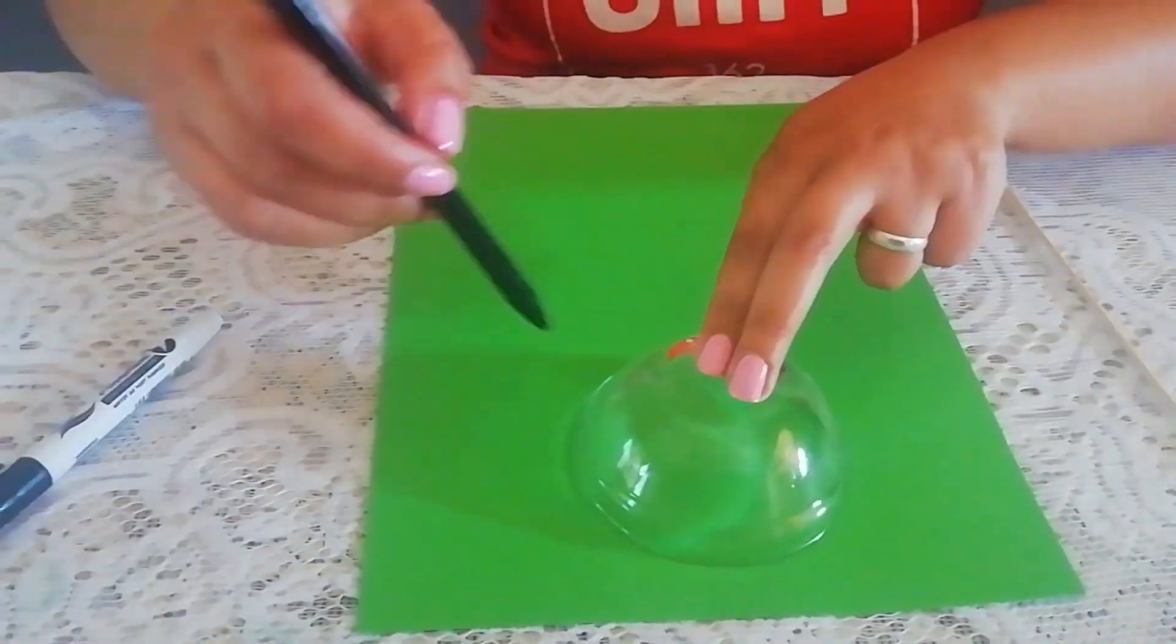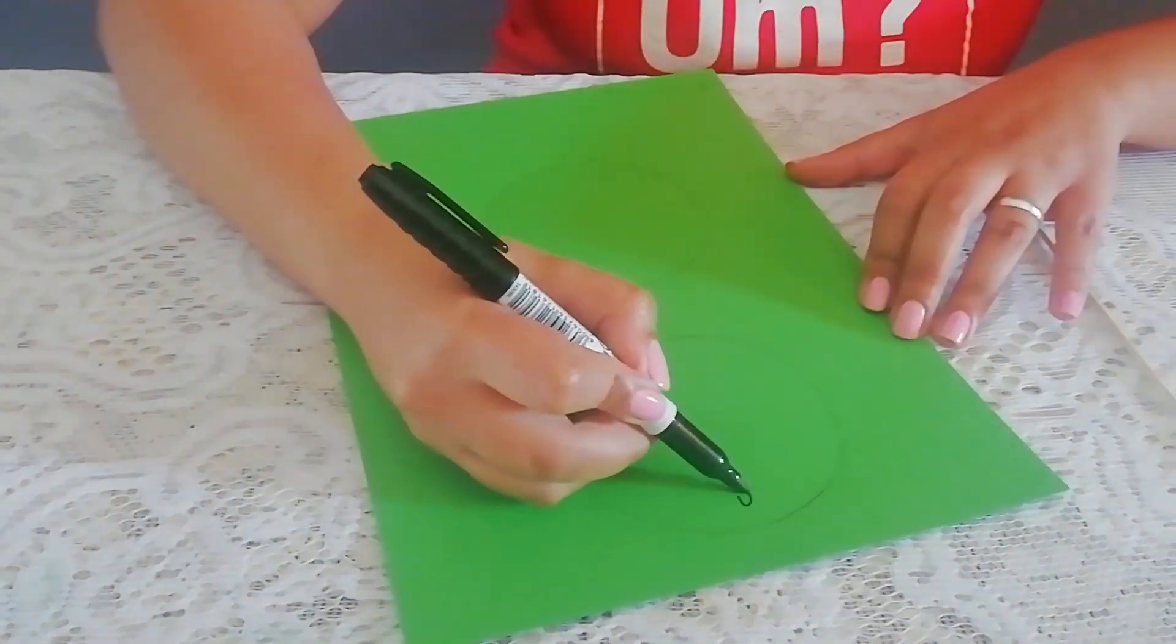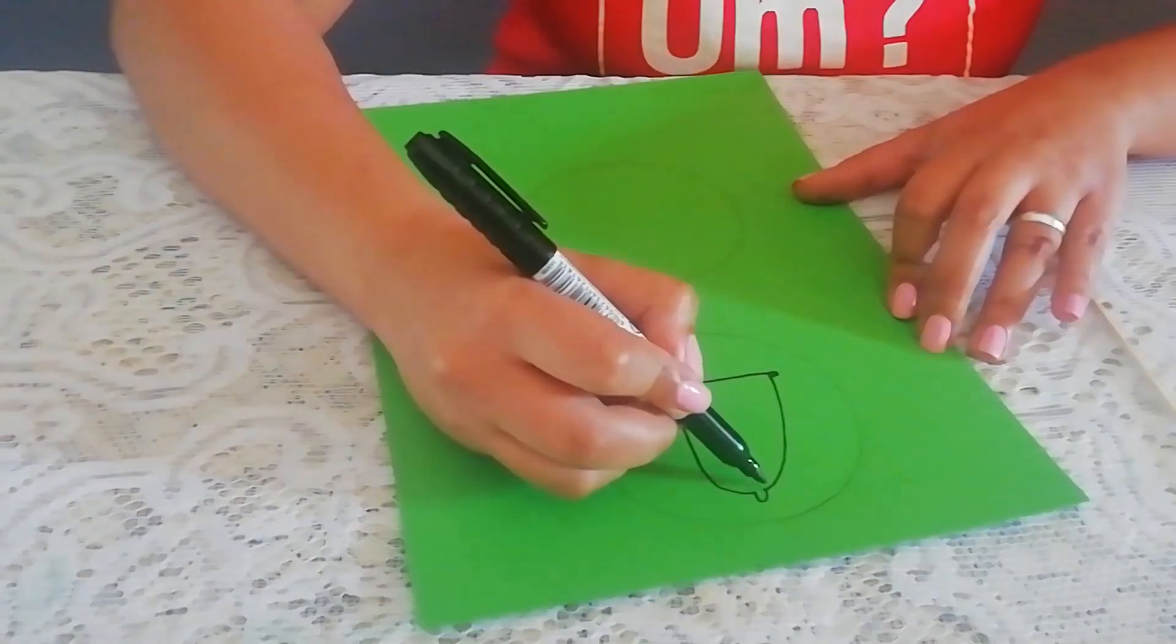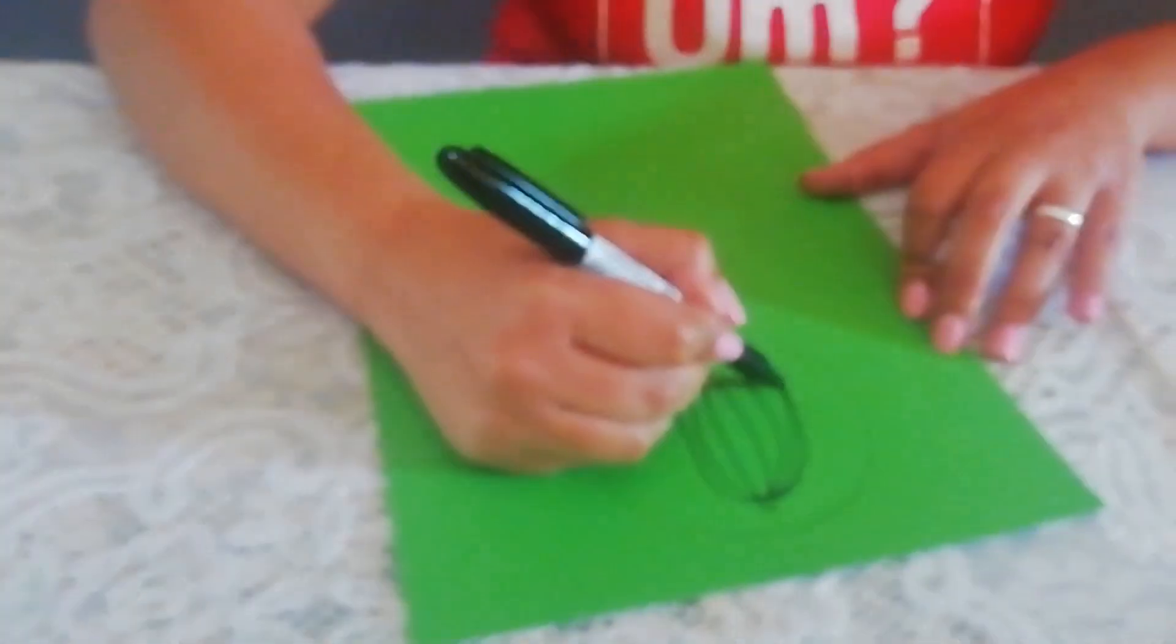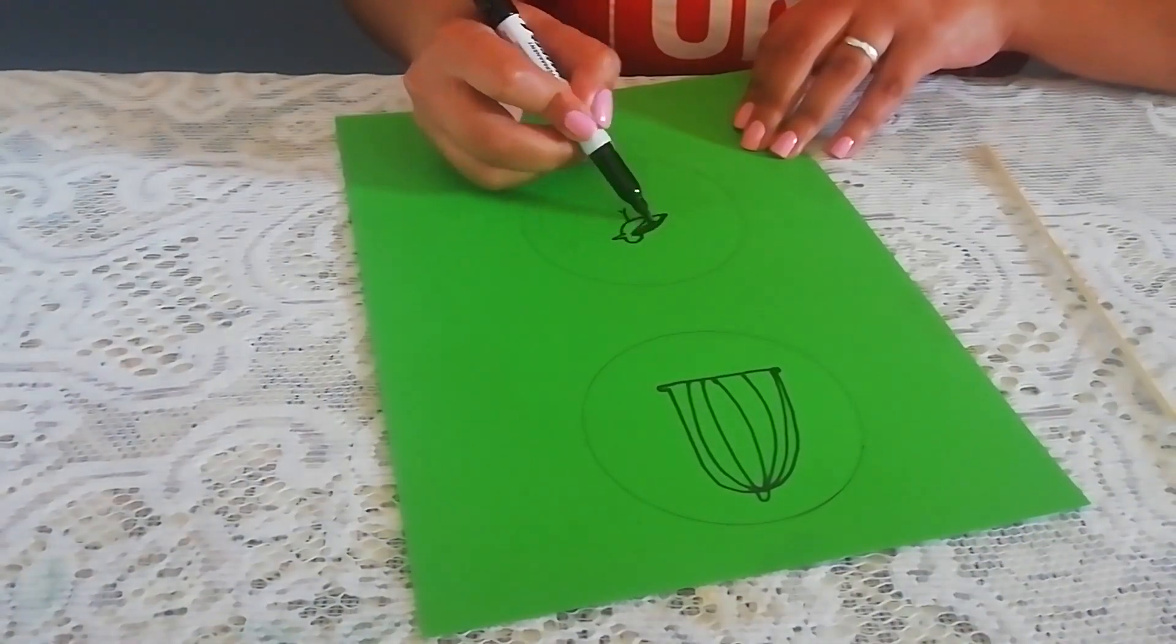Firstly, using a bowl, trace two identical circles on your paper. Then draw two parts of an image of your choice. In the top circle, I am drawing a simple birdcage. And in the bottom circle, a little bird.